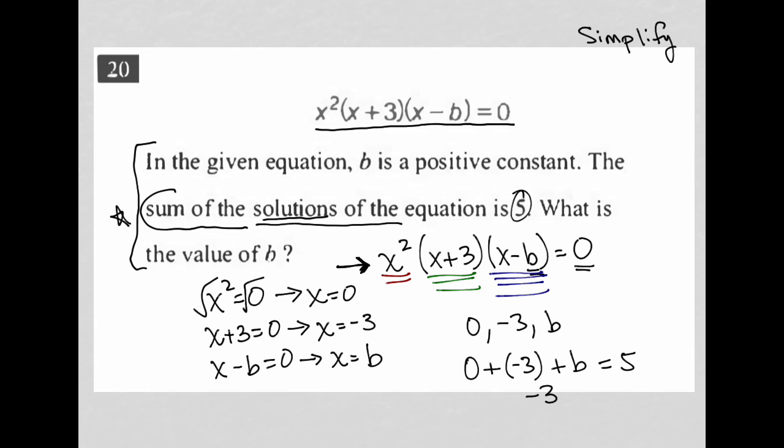Well, let's simplify that. So, zero plus negative three, well, that's just negative three. So, negative three plus B is five. I add three to both sides, and what I'm left with here is that B is equal to eight. The question wants to know what is the value of B. There it is. So, our answer here is eight.